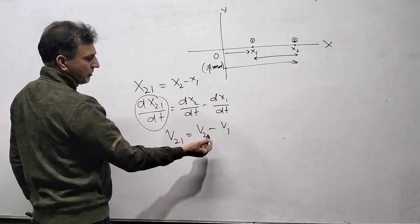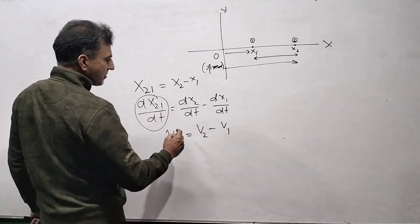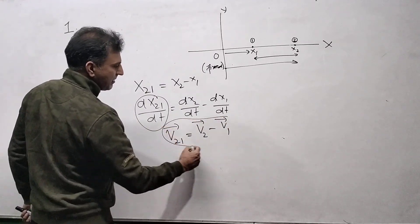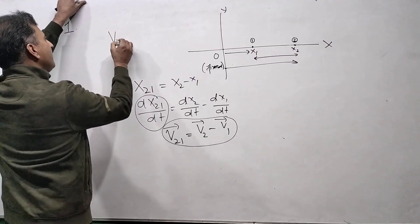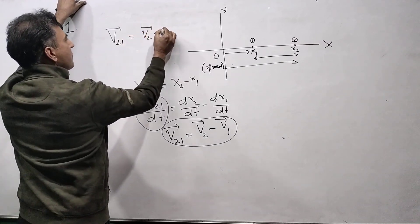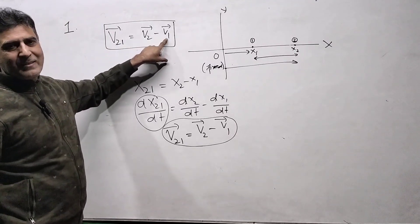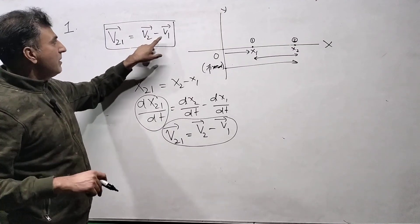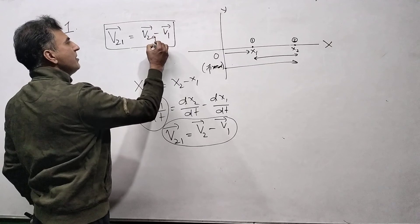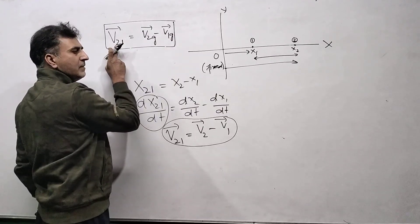This V2 is the velocity with respect to the ground, and V1 is also the velocity with respect to the ground — because nothing is mentioned on the right side, so it is always with respect to the ground. This is the velocity of the second particle with respect to the ground, and this is the velocity of the first particle with respect to the ground. So the velocity of the second particle with respect to the first particle is V2 minus V1, where the first particle is the observer and the second particle is the observed.